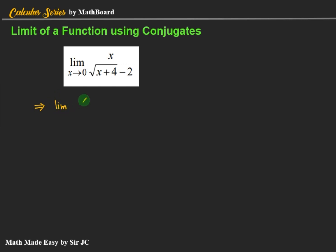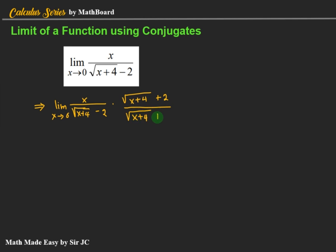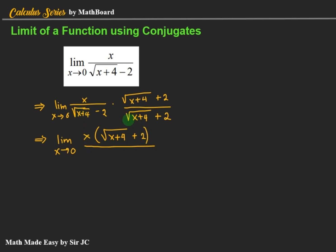We have the limit of x / (√(x + 4) − 2) as x approaches 0. We multiply by the conjugate of the denominator: (√(x + 4) + 2) / (√(x + 4) + 2). In the denominator, √(x + 4) times √(x + 4) gives (x + 4), and negative 2 times positive 2 is negative 4.